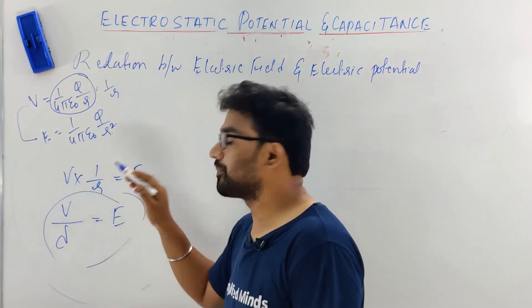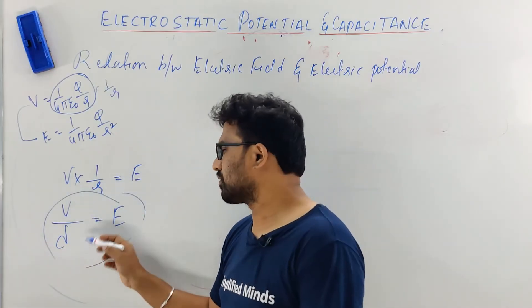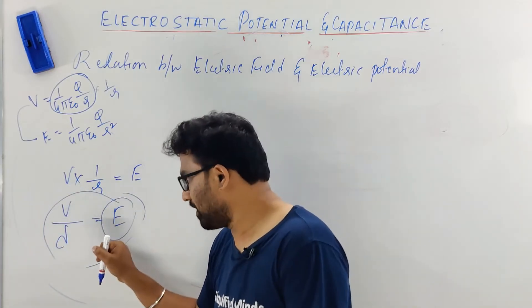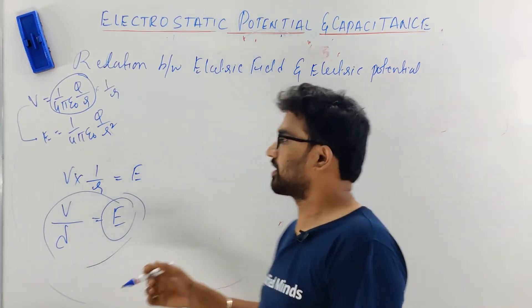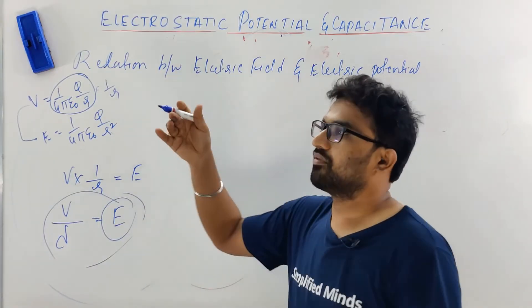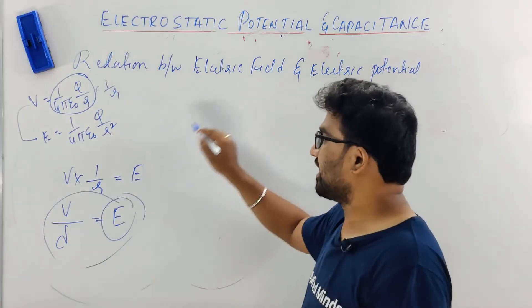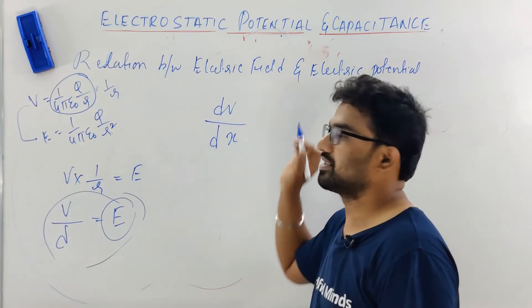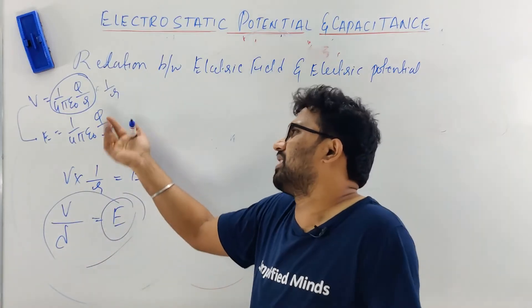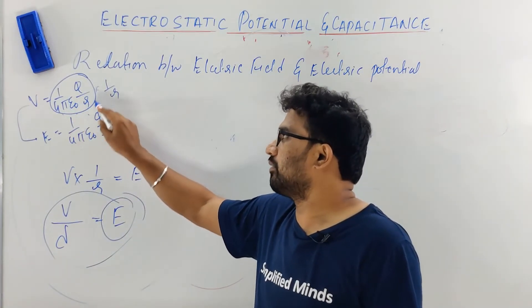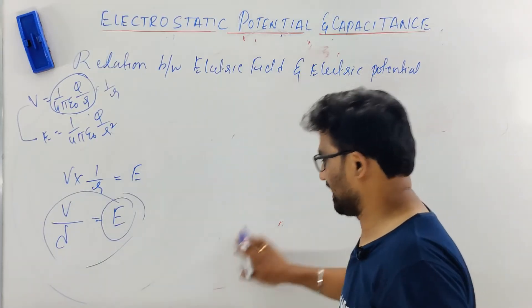This is a very important result — the relation between electric field and electric potential. We also call it: electric field is nothing but the potential gradient. Gradient means how something changes with respect to distance. For example, in fluid mechanics we have velocity gradient. Potential gradient means the change in potential divided by the change in distance. That's called gradient.